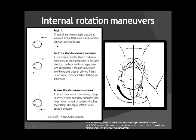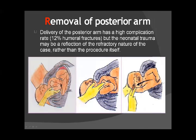Internal rotational maneuvers (Rubin and Woods screw maneuvers) move the shoulders into the oblique diameter, reducing their diameter. Removal of the posterior arm is one of the easiest maneuvers to reduce shoulder diameter — the posterior arm is delivered from the antecubital fossa, effectively reducing the shoulder-to-shoulder diameter and facilitating delivery.